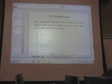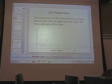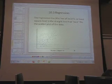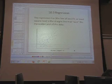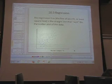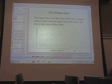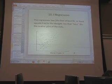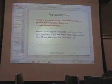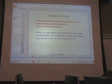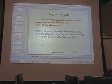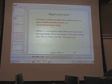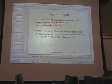So let's talk about regression — 10.3 regression. The regression line, the line of best fit, or the least squares line — the line that best fits the scatter plot of the data. The regression line is used to predict the values of y for a given x. Only use when there is a correlation — a relationship — and that's when you reject H₀.